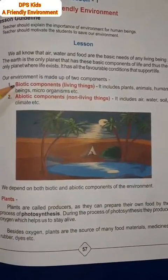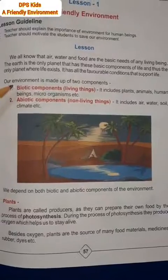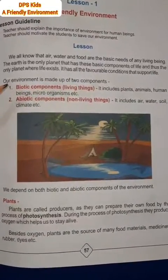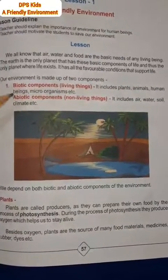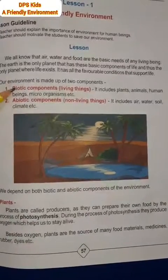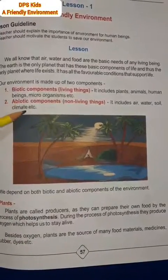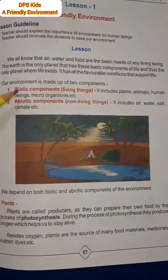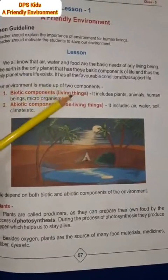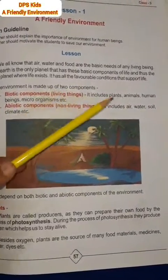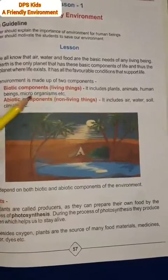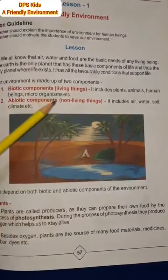Our environment is made up of two components — हमारा जो environment है वो दो components से मिलकर बना होता है: Biotic and Abiotic। Biotic components यानि हमारे आसपास जितनी भी living things होती हैं, जैसे कि plants, animals, human beings, microorganisms, etc।